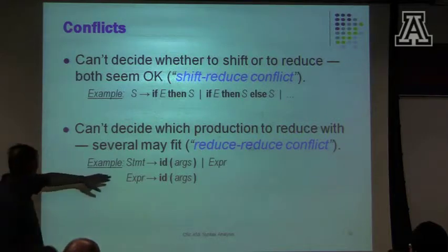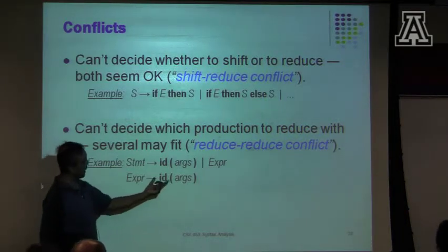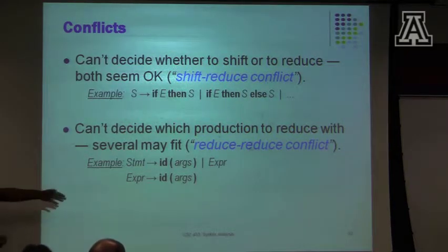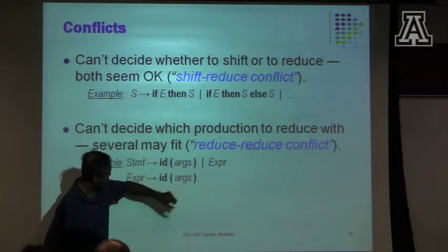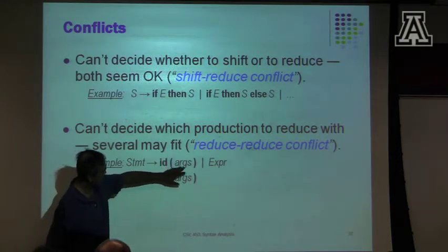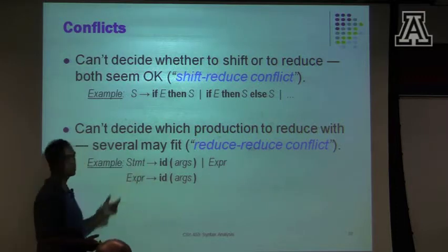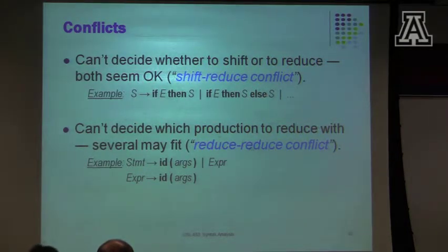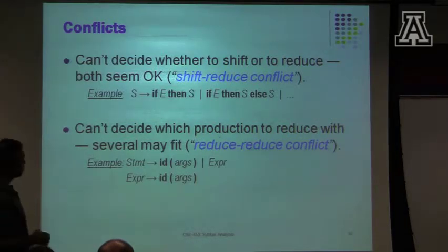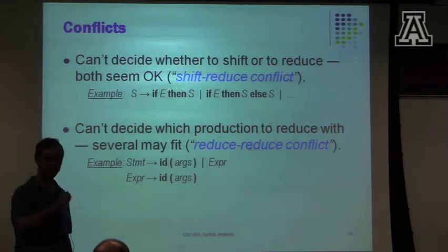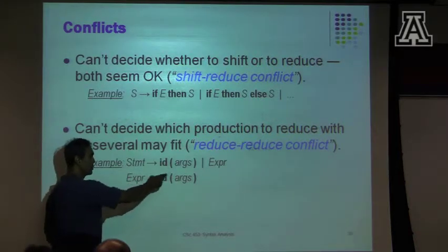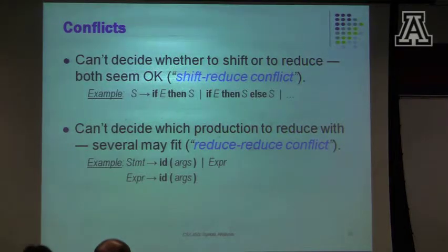Reduce-reduce conflicts occur when you look at an input and it matches the right-hand side of more than one candidate production and you don't know which one to use. For example, an expression can be a function call — an id with args after it — or it might match a statement where the statement goes to an expression. In that case, I don't know if I should reduce to this or reduce using this other production. This is not a very good way to write the grammar, but if you write the grammar this way, you'd run into a reduce-reduce conflict.